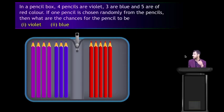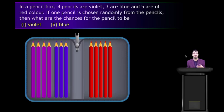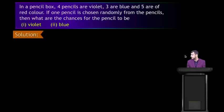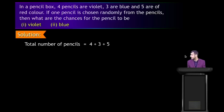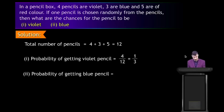One more example: in a pencil box, 4 pencils are violet, 3 are blue, and 5 are red. One pencil is chosen randomly. Total pencils = 4 + 3 + 5 = 12. Probability of getting a violet pencil = 4 by 12; probability of getting a blue pencil = 3 by 12 = 1 by 4.